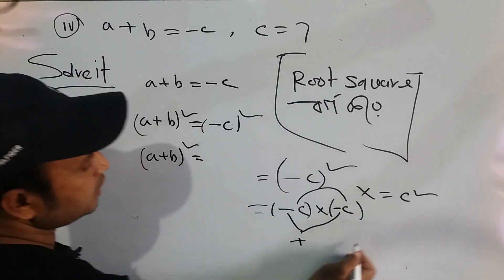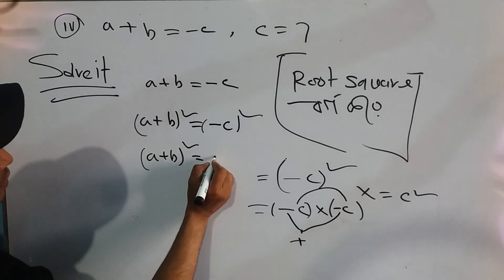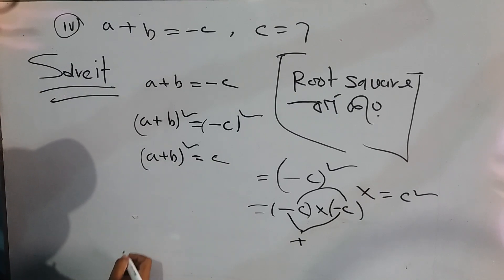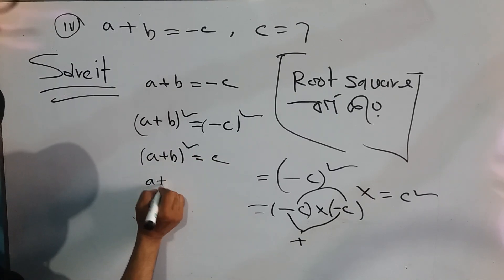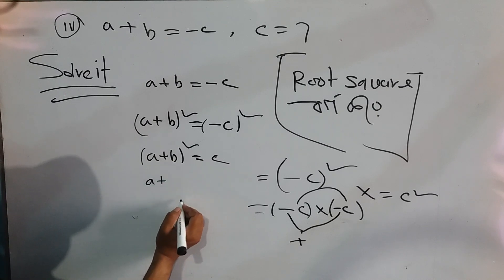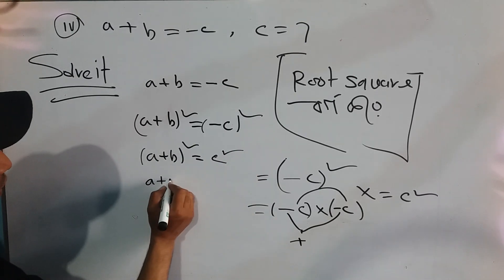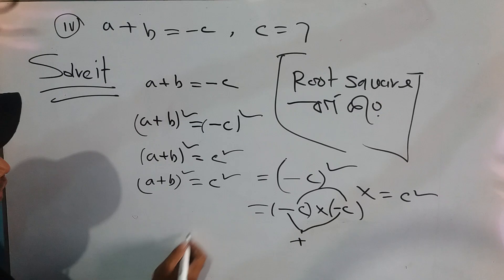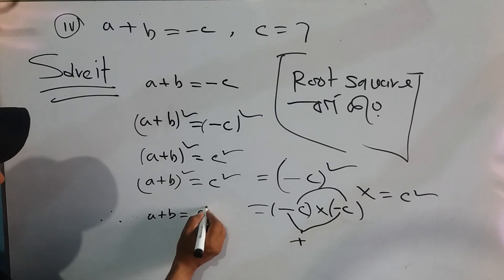So we can write c squared. A plus b whole square equals c squared. So a plus b whole square equal to c squared.